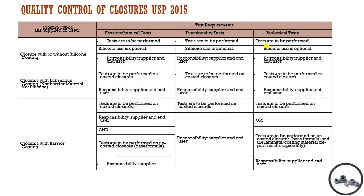USP has classified closures into two types: Type 1 closures and Type 2 closures. Type 1 closures are those meant for aqueous preparations, and Type 2 closures are those meant for non-aqueous preparations.